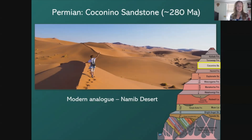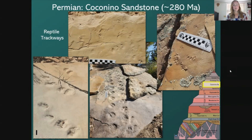Jumping into the Coconino Sandstone — I've included a picture of the Namib Desert because it represents what the Coconino Sandstone might have looked like: essentially a sand dune sea, sand as far as the eye can see. We can see that in the rocks with the cross-bedding of each sand dune. The most common fossils we find in the Coconino are reptile trackways.